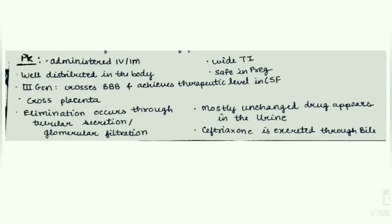Pharmacokinetics of cephalosporins: they are administered intravenously and intramuscularly, well distributed in the body. Third generation can cross the blood-brain barrier and achieve therapeutic levels in CSF. They can cross the placenta. Elimination occurs mainly through tubular secretion or glomerular filtration. They have a wide therapeutic index, are safe in pregnancy, mostly unchanged drug appears in the urine, and ceftriaxone is excreted through bile.